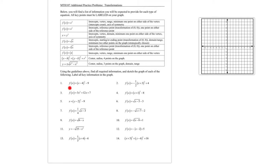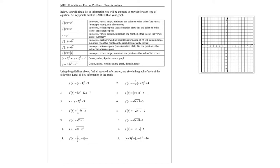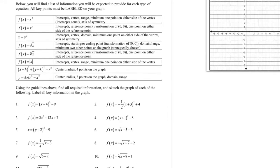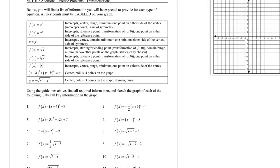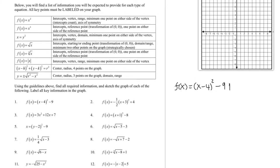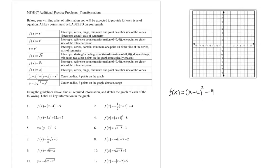Looking at problem number one, that is most definitely a quadratic function — a version of f(x) = x² but with some transformations. The professor is looking for intercepts first. For the intercepts, you want to find what x equals when y is 0, and what y equals when x is 0.